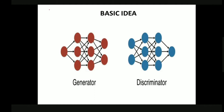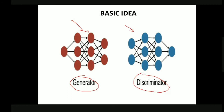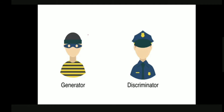Let's get a basic idea of what GANs are. GANs consist of a pair of neural networks which fight against each other. There are two types of networks: one is called the generator network and the second is called the discriminator network.